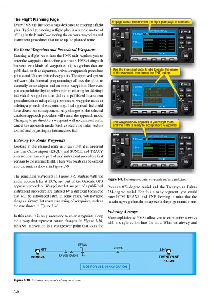The Flight Planning Page. Every FMS unit includes a page dedicated to entering a flight plan. Typically, entering a flight plan is a simple matter of filling in the blanks — entering the en-route waypoints and instrument procedures that make up the planned route. On-route waypoints and procedural waypoints: entering a flight route into the FMS unit requires you to enter the waypoints that define your route. FMSs distinguish between two kinds of waypoints.